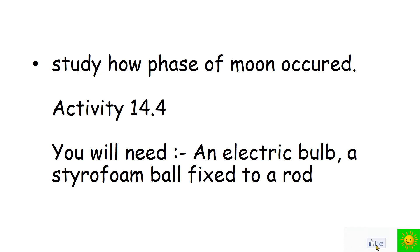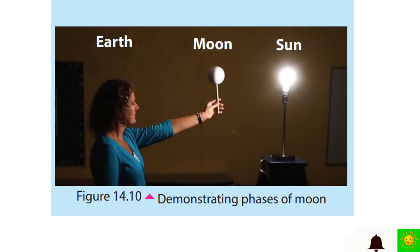Let's study how phases of moon occur. We need an electric bulb, a styrofoam ball fixed to a rod. Let's see what we have to do. Use an electric bulb instead of the Sun and styrofoam ball fixed to a rod instead of moon. This activity is to be done in a dark room. Hold the styrofoam ball, turn around yourself, and observe the illuminated part of the ball.